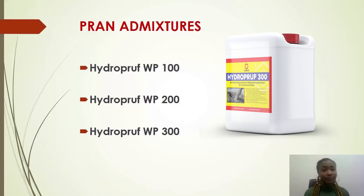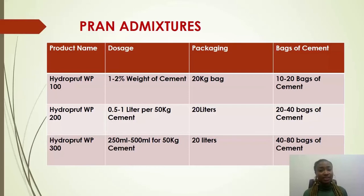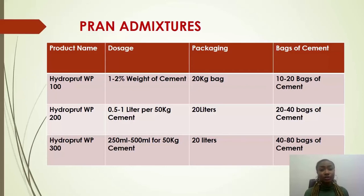This table shows the dosage and packing, and the number of bags of cement each product covers. Hydroproof WP100 has a dosage of 1.2% by weight of cement, packed in 20 kg bags, and one bag covers 10 to 20 bags of cement depending on the dosage rate. Hydroproof WP200 has a dosage of 0.5 to 1 liter per 50 kg bag of cement, packed in 20 liters, and one keg covers 20 to 40 bags of cement. Hydroproof WP300 has a dosage of 250 ml to 500 ml per 50 kg cement, also packed in 20 liters, and covers 40 to 80 bags of cement.